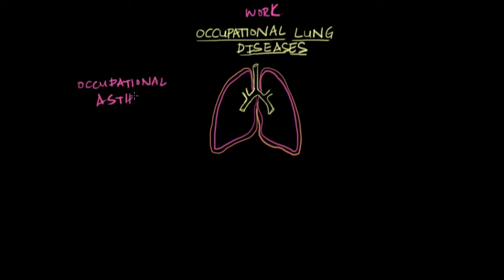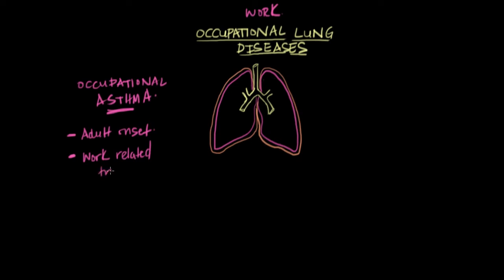The most common type of occupational lung disease is occupational asthma. What distinguishes occupational asthma from regular asthma is, firstly, that occupational asthma is something that develops in adulthood — it's a type of adult-onset asthma. Secondly, occupational asthma occurs in response to some trigger that's found at work, so these patients will often experience signs and symptoms of asthma when they're at work, when they're being exposed to this trigger.